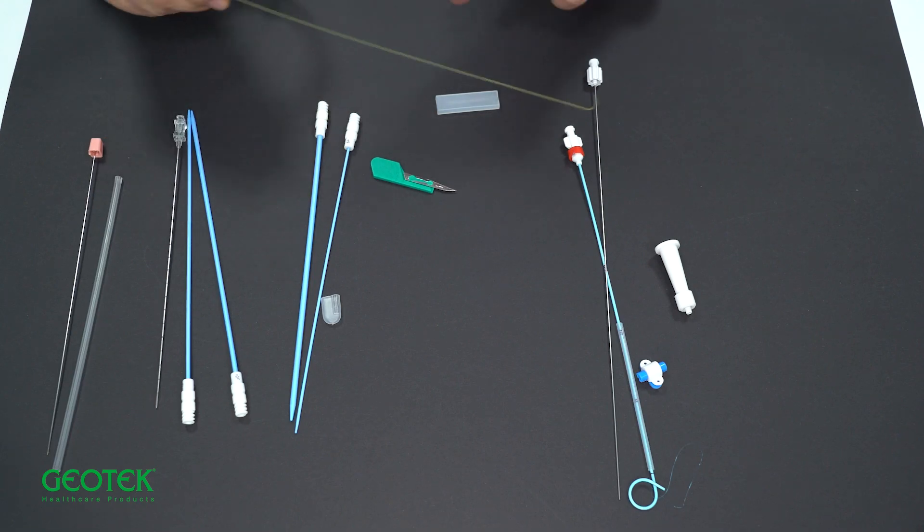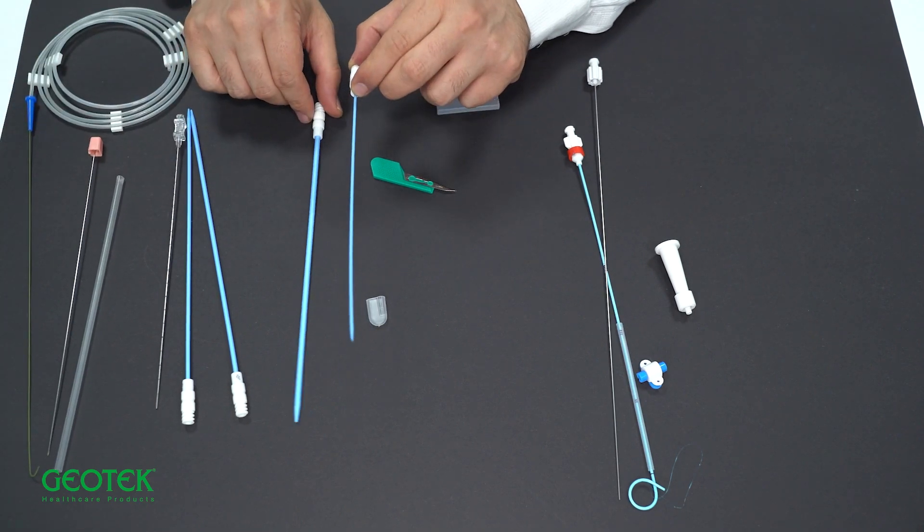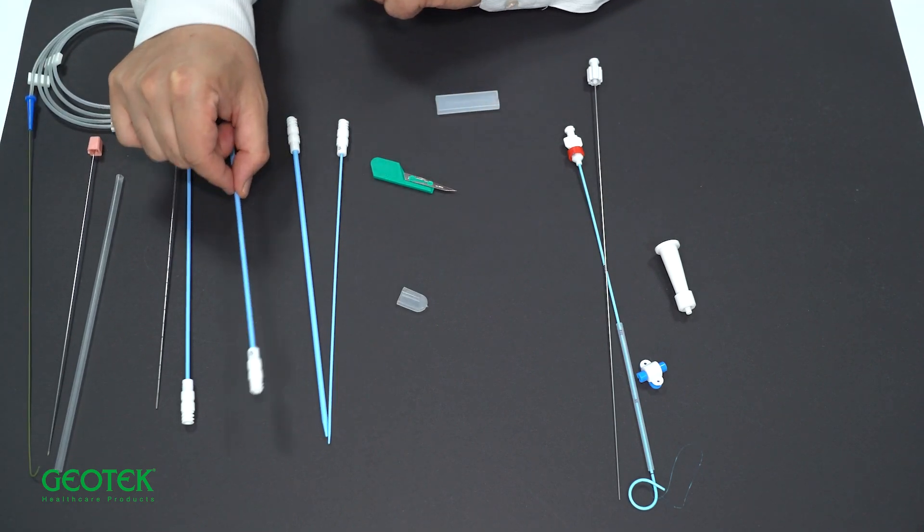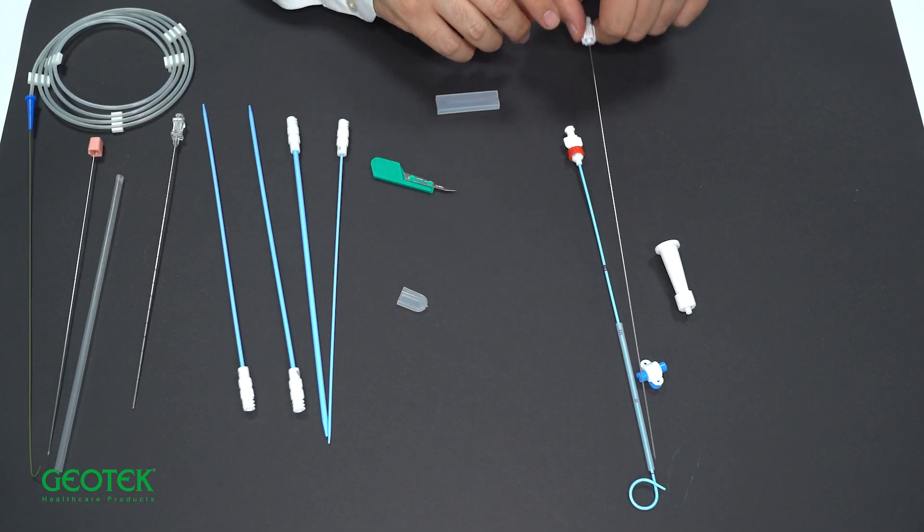After this wire is sent, the needle is removed and the percutaneous nephrostomy tract is dilated with dilators over the wire.